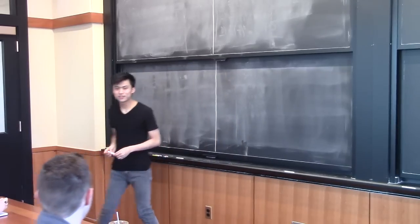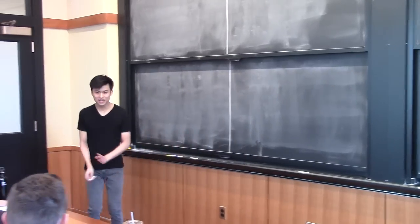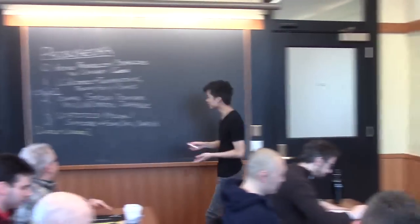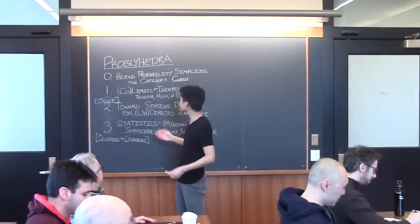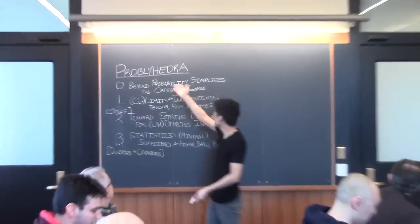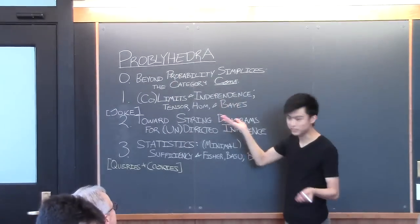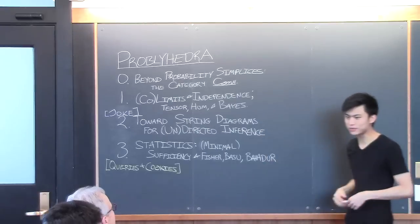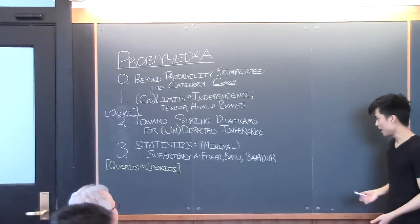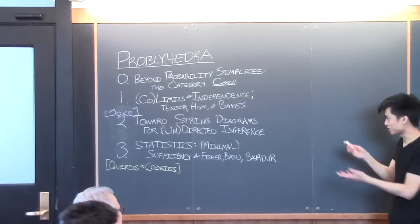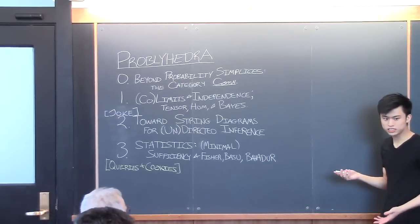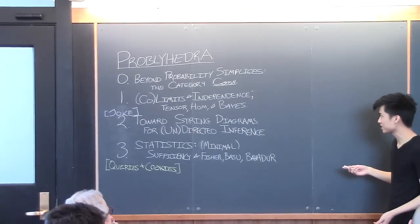Sam Tenka talking about probability. We'll talk about probability, and you've probably seen how probability simplices can be used to parameterize the space of distributions, especially over a finite set.